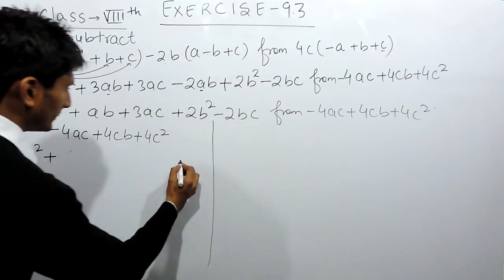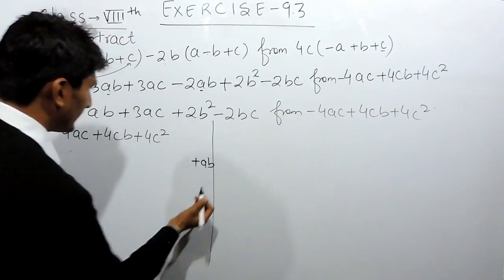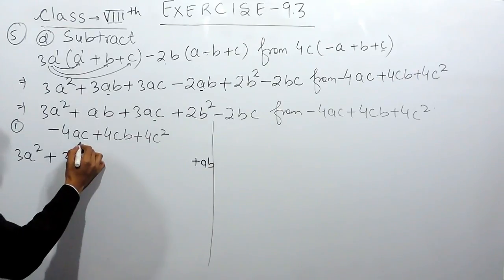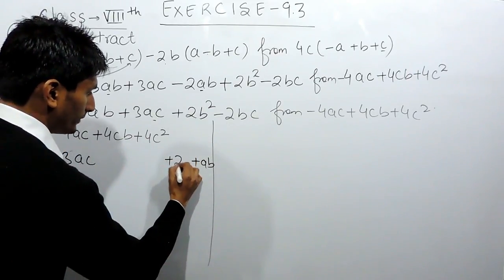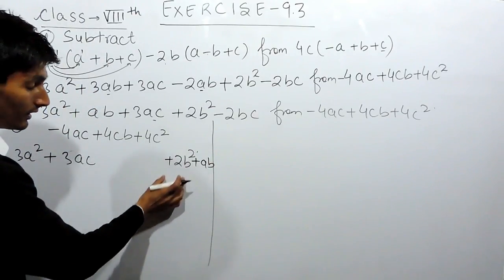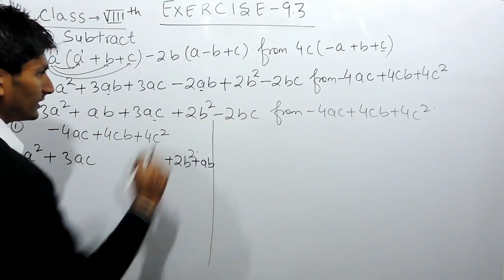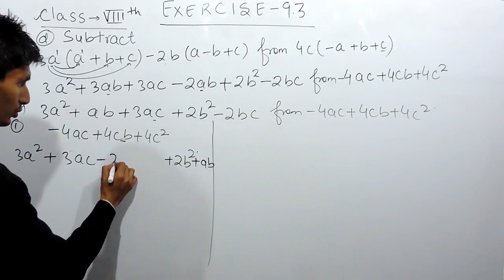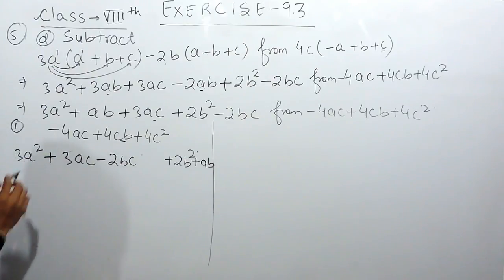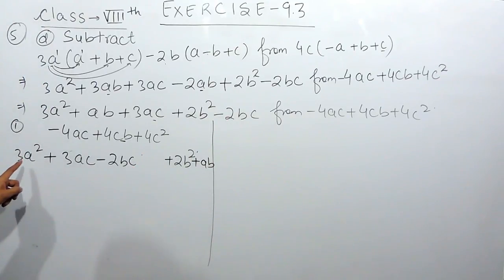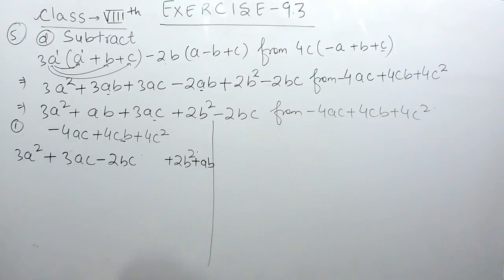This ac will be written below the ac term. Again, plus 2b square will remain as it is, written separately. And at the last, we write bc — so minus 2bc is written below bc. Now let's count: there are 5 terms on top and 5 terms below, so all 5 terms are written. Now we have to subtract, so we change the signs: positive becomes negative, positive becomes negative, this becomes positive, this becomes negative, and this becomes negative.